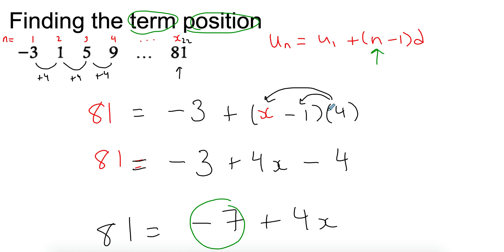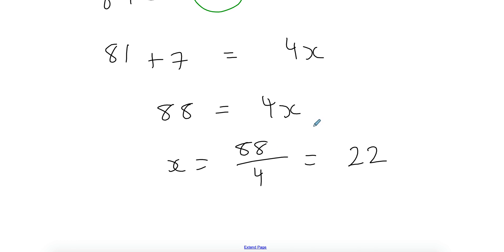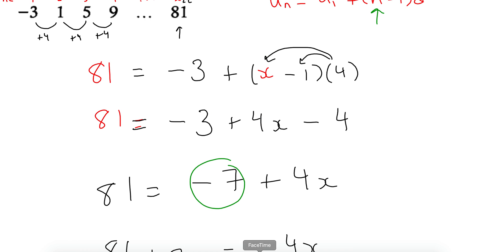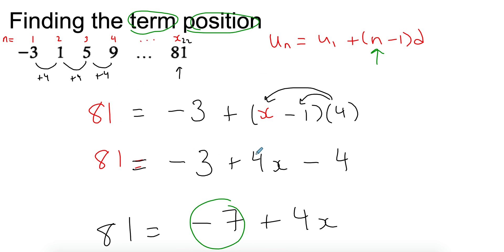If you got the wrong answer, maybe something went wrong in between, as long as you've kept the correct form. That's how you find the term position. Keep in mind: if they want the term position, they want x. If they ask what position is 81 in — that's the sort of thing they ask.